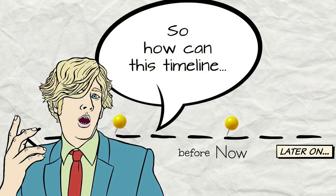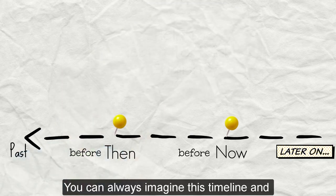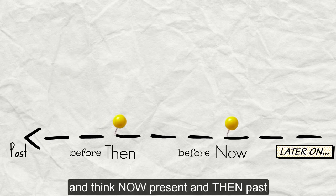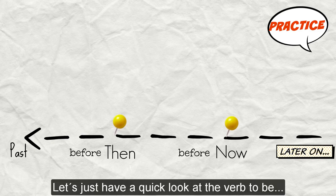So how can this timeline help me learn to think English? You can always imagine this timeline and think now, present, and then, past, to practice all verb forms. Let's just have a quick look at the verb to be.